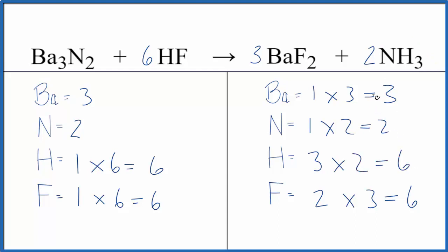This equation is balanced. That's the balanced equation for Ba3N2 plus HF. The type of reaction is double displacement because the barium and the hydrogen switch places.